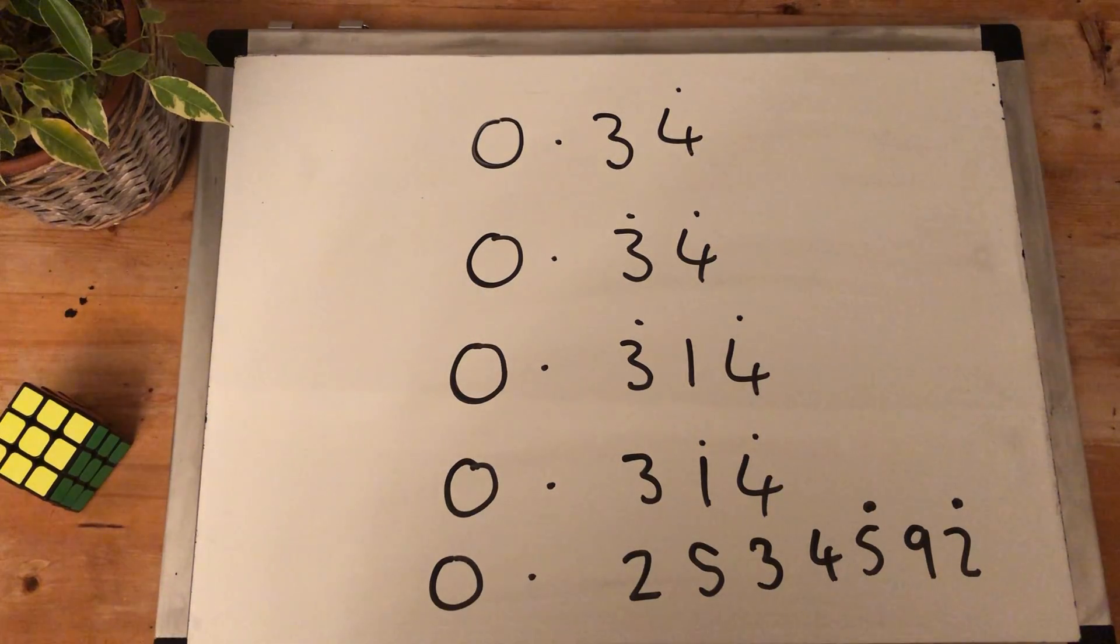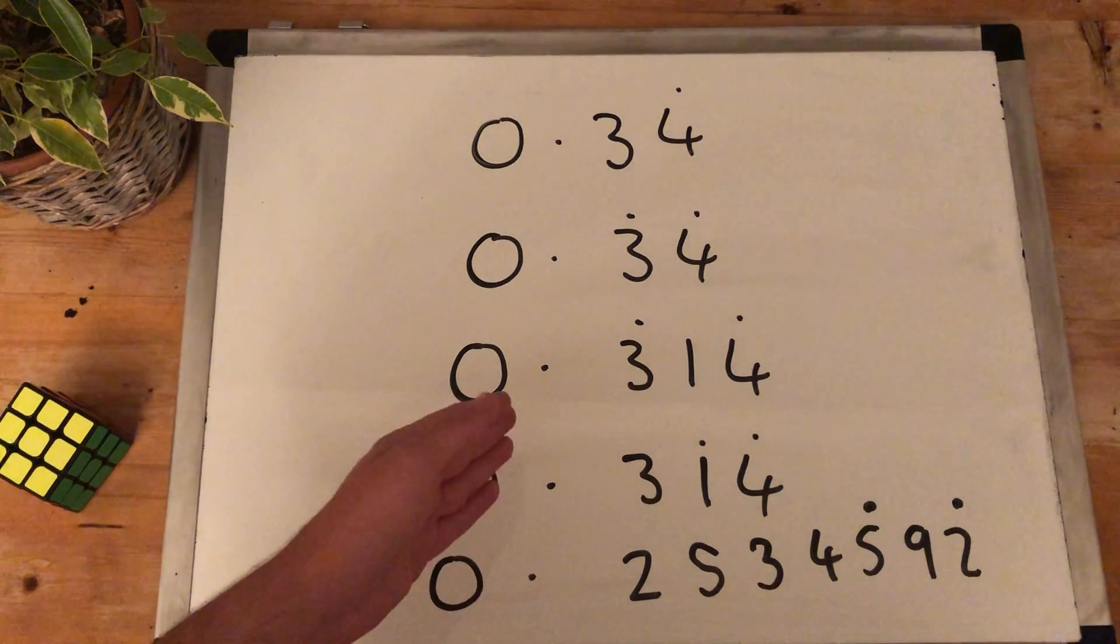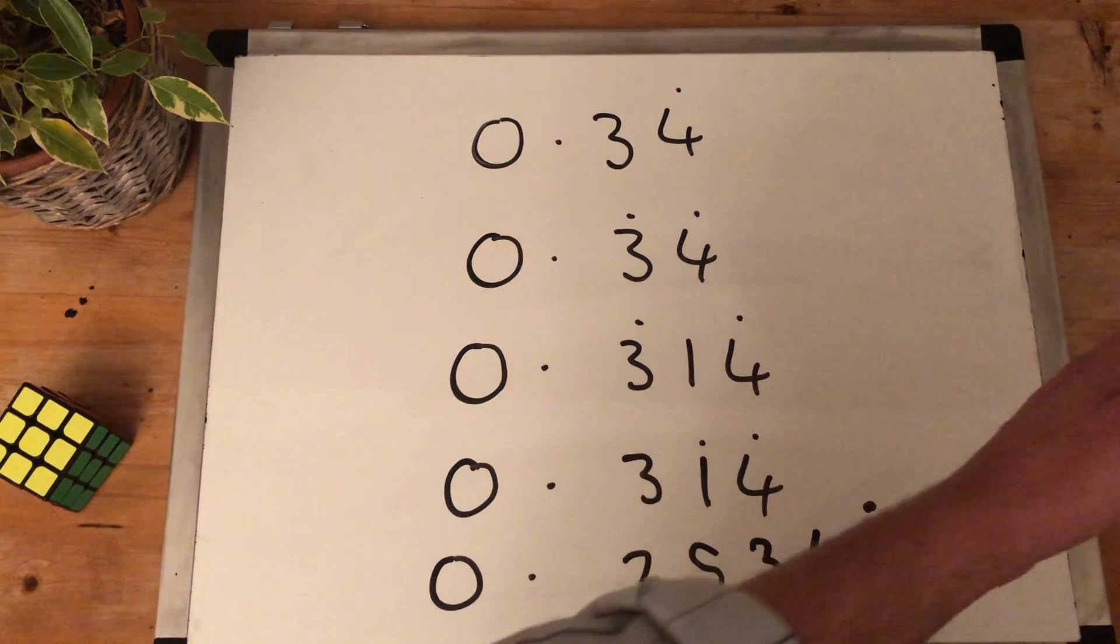If a number is sandwiched between two recurring numbers, that number also recurs. So this one here is 0.3143143143 forever.